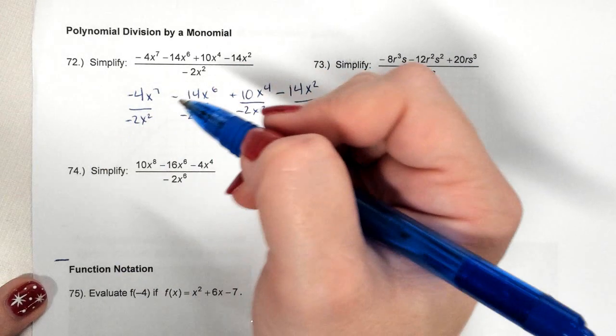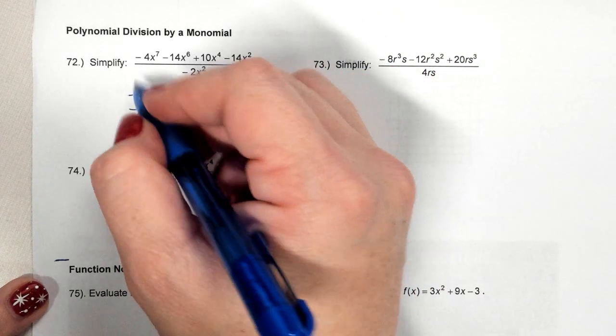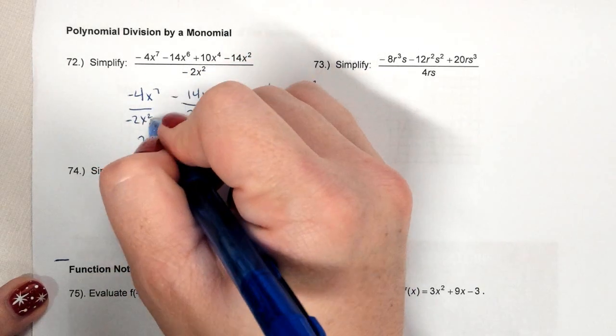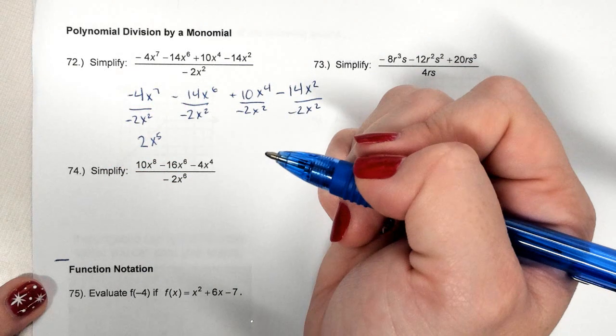So -4 divided by -2: two negatives make a positive. 4 divided by 2 is 2. More x's on top, 7 minus 2 is 5. There's nothing left on bottom, so I don't need a fraction.